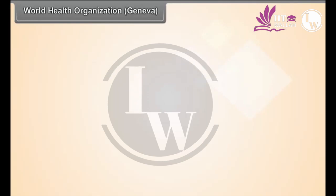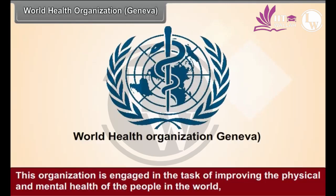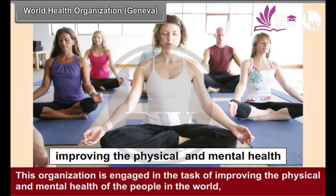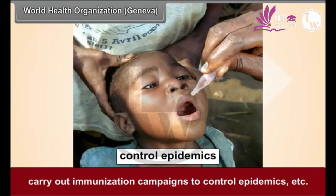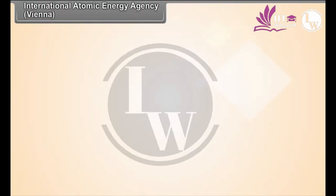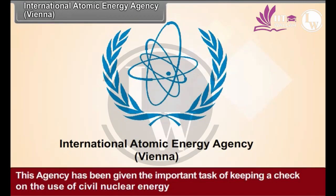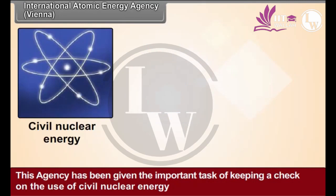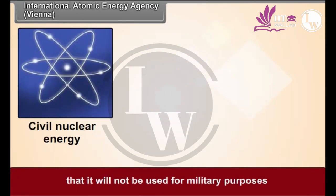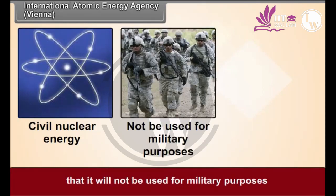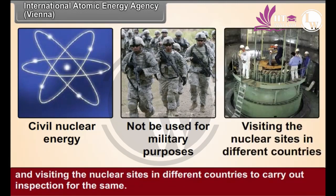The World Health Organization, based in Geneva, is engaged in improving the physical and mental health of people in the world and carrying out immunization campaigns to control epidemics. The International Atomic Energy Agency, based in Vienna, has been given the important task of keeping a check on the use of civil nuclear energy to ensure it will not be used for military purposes, and visiting nuclear sites in different countries to carry out inspection for the same.